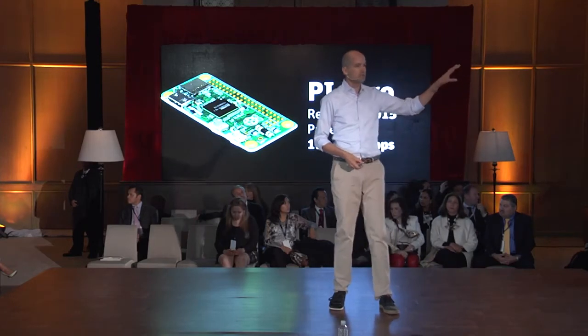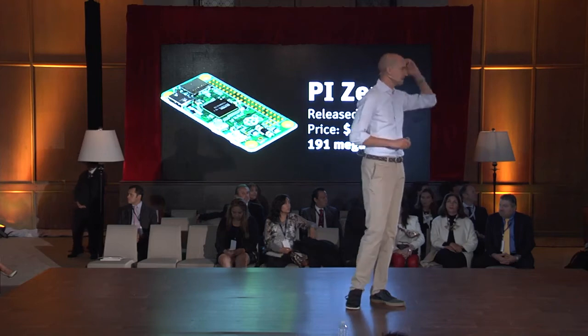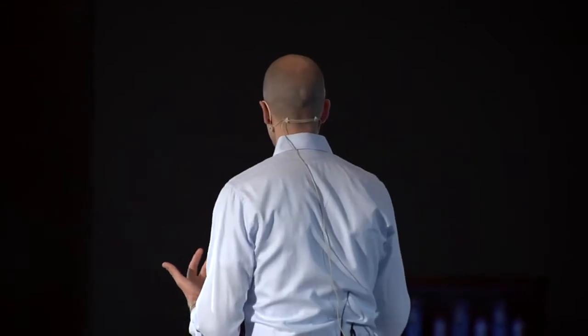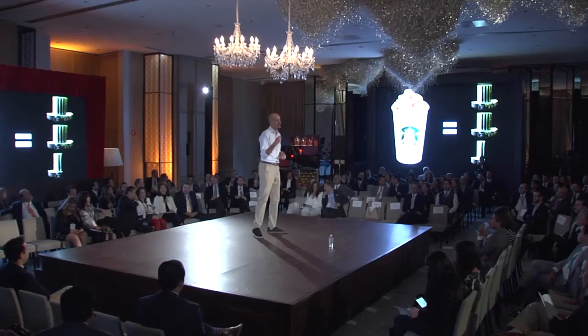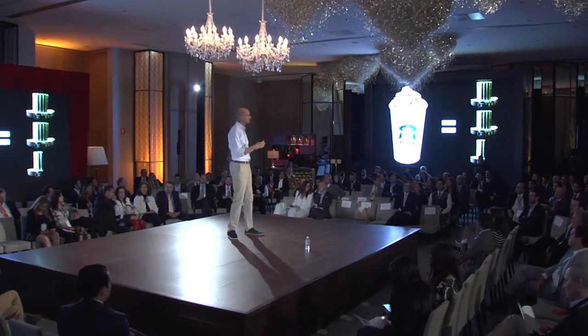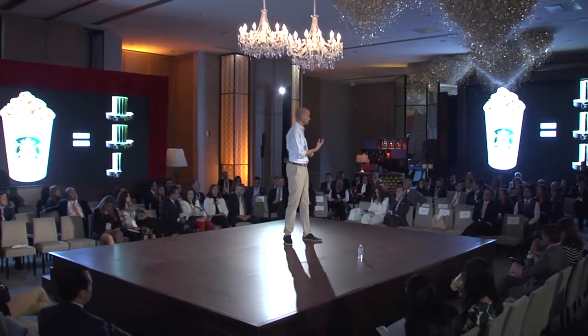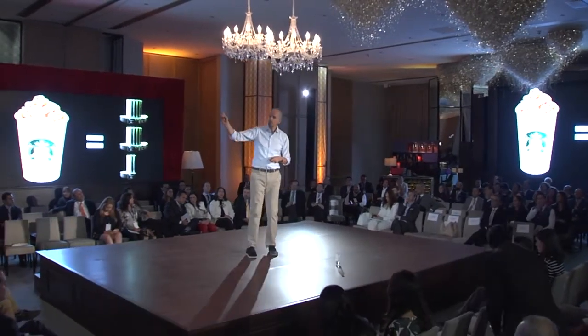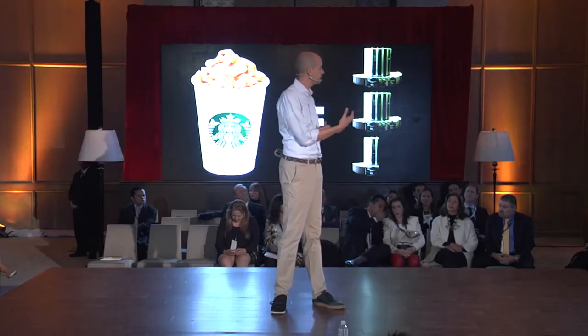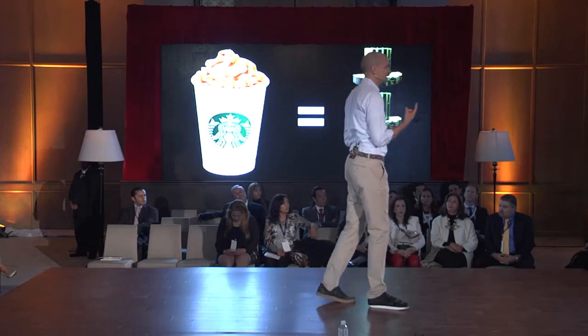Last December a little computer came out called the Pi Zero — the size of a pack of gum, costs five dollars, and has 191 megaflops. It's a full-scale computer: you plug in a monitor, keyboard, mouse, and memory and run Windows on it. Five dollars for a Windows-compatible computer. Take the price of a Venti Starbucks latte — about five dollars in the US — and you now get the compute power of two and a half Cray-1 supercomputers. The Cray-1 cost about $100 million and had more compute power than NASA had in total to put the man on the moon.